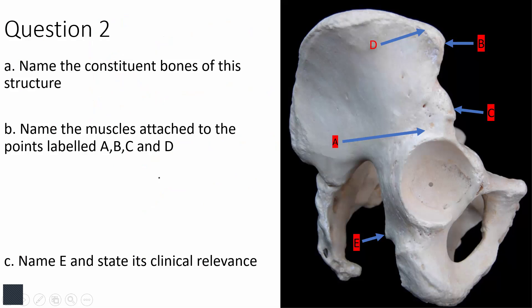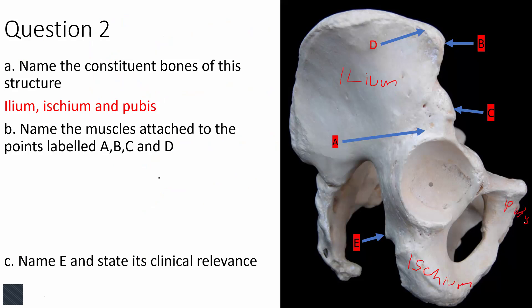The next question shows the hip bone, and you've been asked to name its three constituents. By now you should know them: the ilium, ischium, and pubis. The ilium is this part, the ischium is the part you sit on, and the pubis is that part. What are the muscles attached to points A, B, and C?